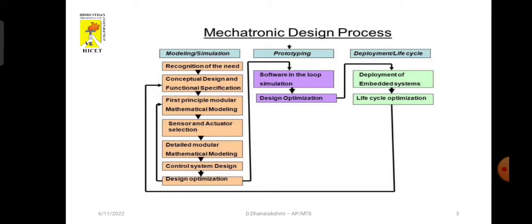We have to identify what are the components present in the model or product and identify the specification of each component. Next one is first principle modular mathematical modeling. We divided the system into subsystems, many subsystems. Next we have to develop the mathematical model for each subsystem.